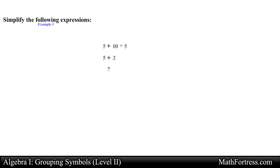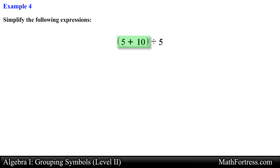Let's try the next one. This expression is similar to the last one, but the only difference is that we have a grouping symbol at the start. So like always we simplify the expression within the grouping symbol first. Adding 10 and 5 gives us 15, and now we take 15 and divide it by 5 which reduces to 3.